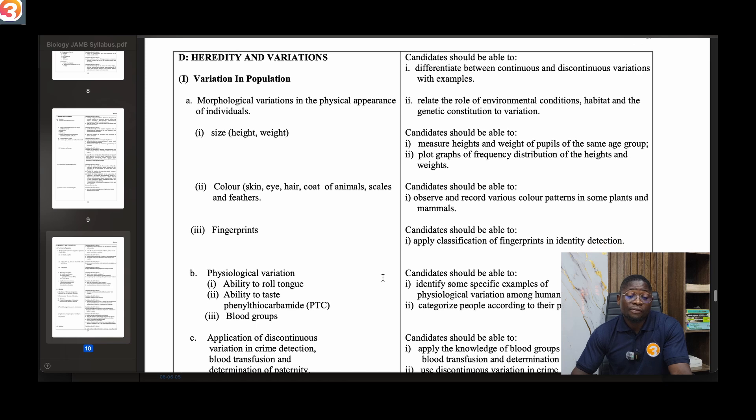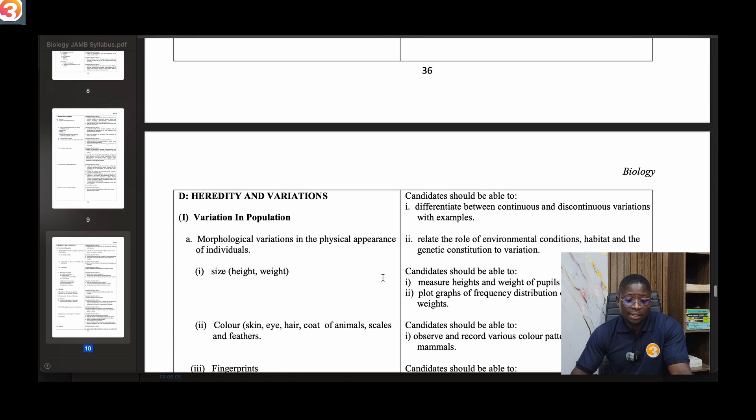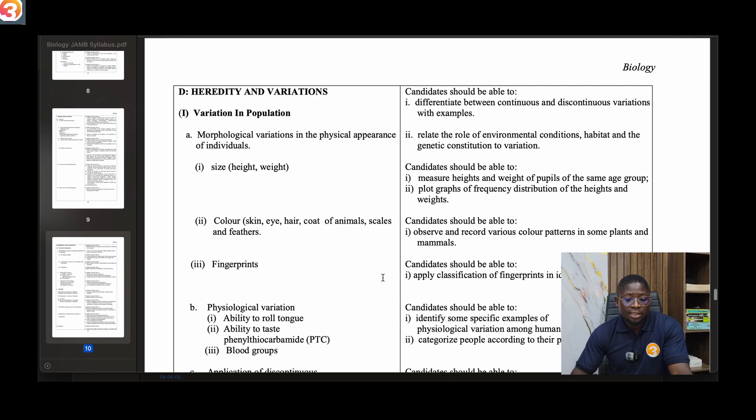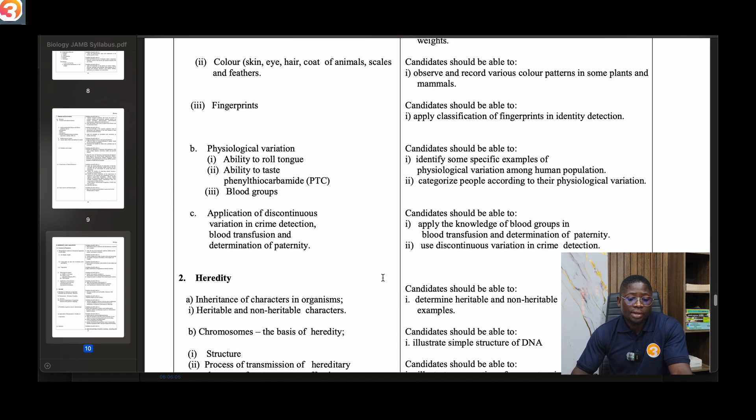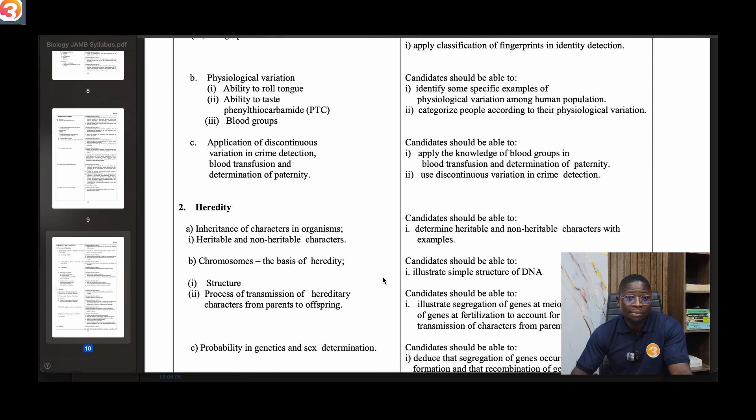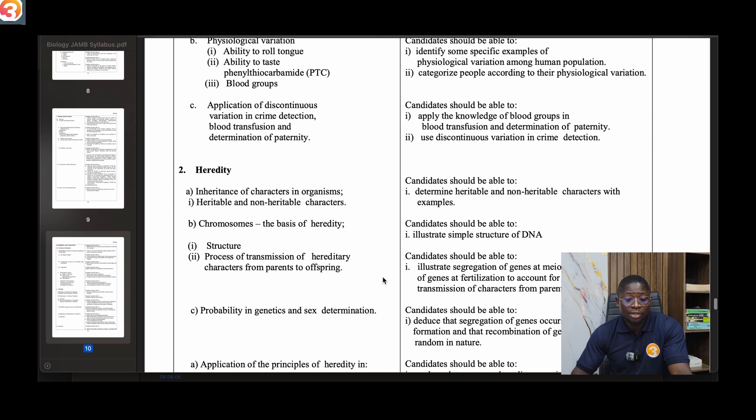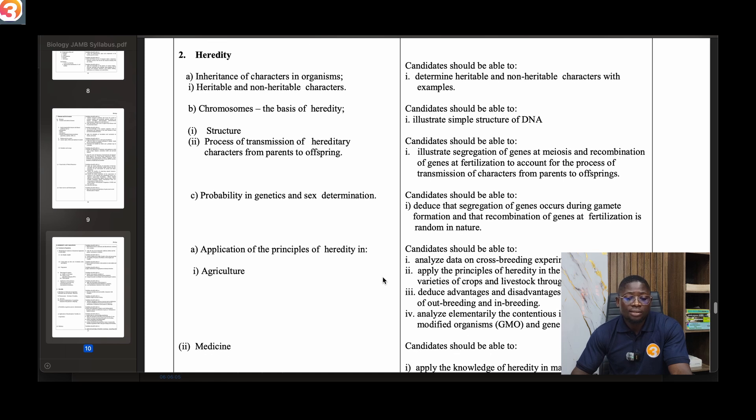Then part D - heredity and variations. The first topic is variation in population - morphological variations in the physical appearance of individuals, size, color, fingerprints. Physiological variation - ability to roll tongue, ability to taste phenylthiocarbamide PTC, blood groups. Application of discontinuous variation in crime detection, blood transfusion and determination of paternity. Then topic two, heredity - inheritance of characters in organisms, heritable and non-heritable characters, chromosomes as the basis of heredity.